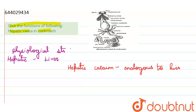If we talk about cockroach particularly, the hepatic cecum is present at the junction of the foregut and midgut. As you can see in the diagram, this is the alimentary canal of cockroach and these structures are the hepatic cecum, present at the junction of foregut and midgut.